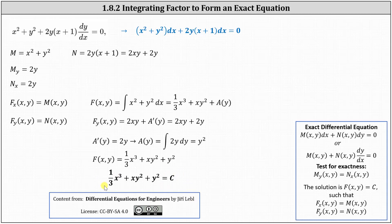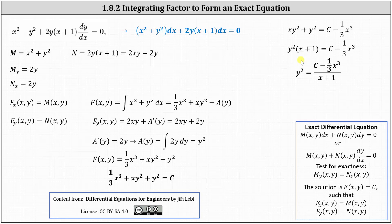This is the implicit form of the general solution. To solve explicitly for y, we subtract (1/3)x³ from both sides, factor out y² on the left to get y²(x + 1), then divide both sides by (x + 1), and take the square root of both sides including a plus or minus. This gives y = ± √[(c − (1/3)x³) / (x + 1)].